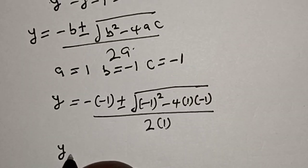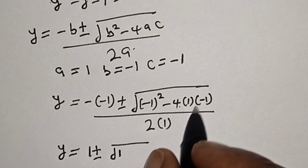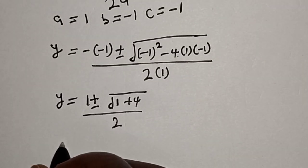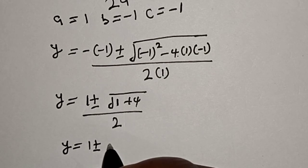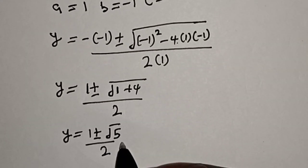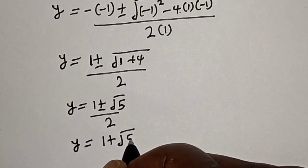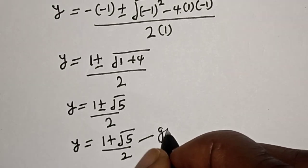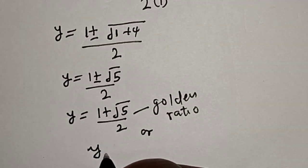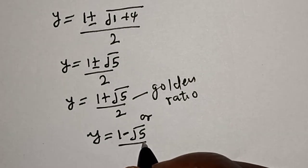We get y equals 1 plus or minus square root of 1 minus 4 times 1 times negative 1, which gives plus 4, all divided by 2. So y equals 1 plus or minus square root of 5, over 2. Therefore y equals 1 plus root 5 over 2, which is also called the golden ratio, or y equals 1 minus root 5 over 2.